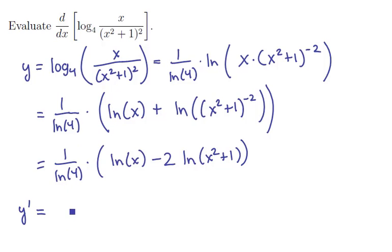The 1 over ln of 4 is just a constant, comes along for the ride. So let's differentiate inside these parentheses. The derivative of ln of x is of course 1 over x minus 2 times the derivative of this is 1 over blank times the derivative of blank. The blank is x squared plus 1, its derivative is 2x.